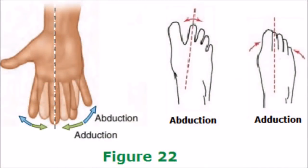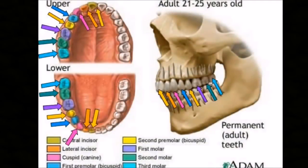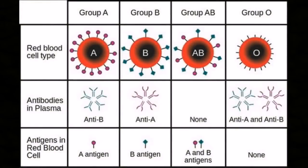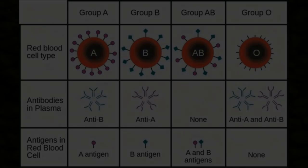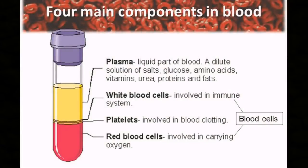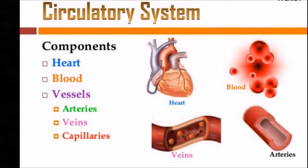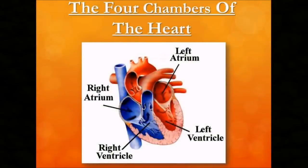Did you know humans have four canine teeth and four wisdom teeth? How about the four main human blood types — A positive, B positive, AB positive, and O positive? Speaking of blood, did you know that our blood is made up of four main components? Plasma, white blood cells, platelets, and red blood cells. What about our hearts that pump this blood? Also divided into four chambers: the right atrium, the left atrium, the right ventricle, and the left ventricle.